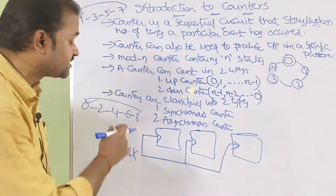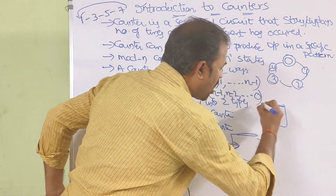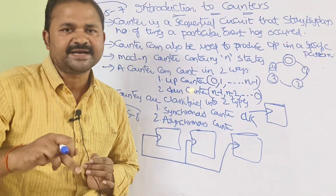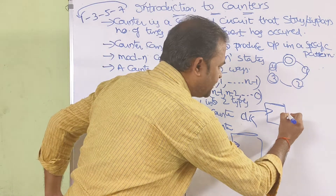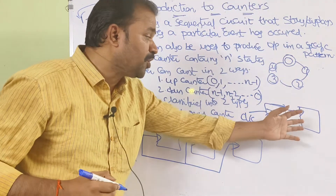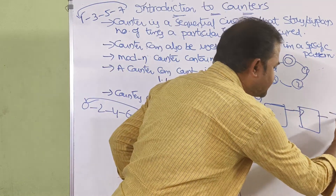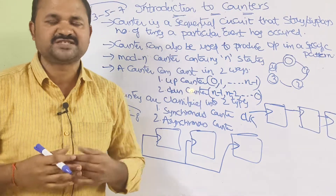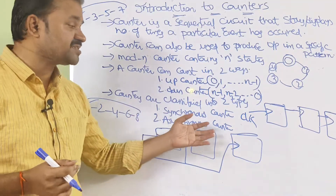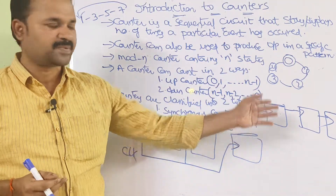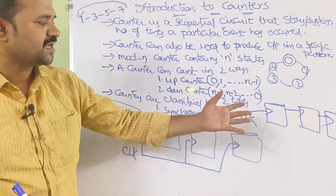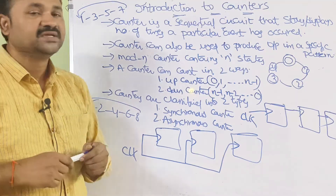In an asynchronous counter, the clock pulse is applied only to the first flip-flop. The output of the first flip-flop is connected as the clock pulse to the second flip-flop, and the output of the second flip-flop is connected as the clock pulse to the third flip-flop, and the process continues likewise. This concludes the introduction to counters.